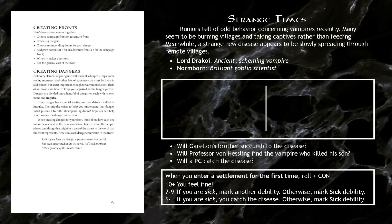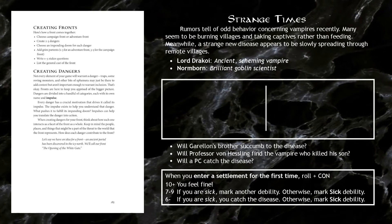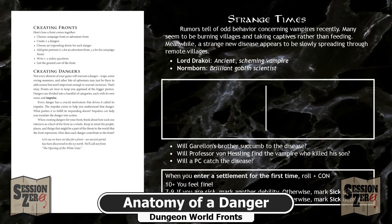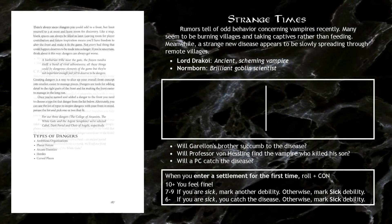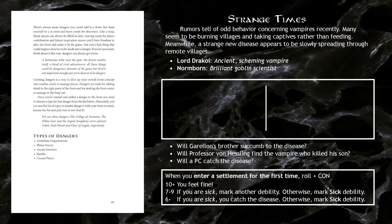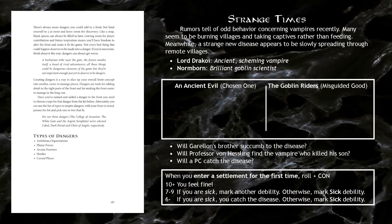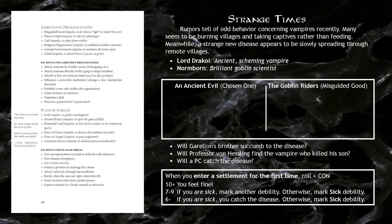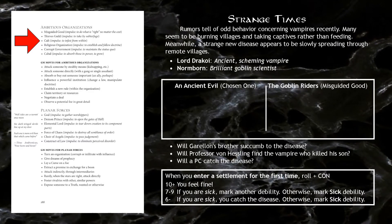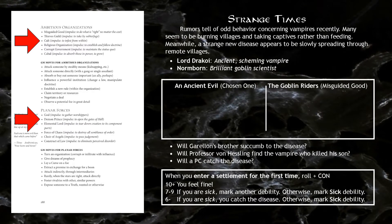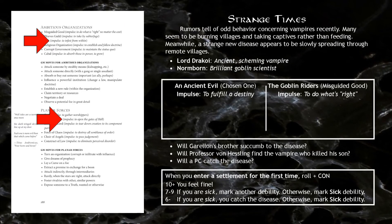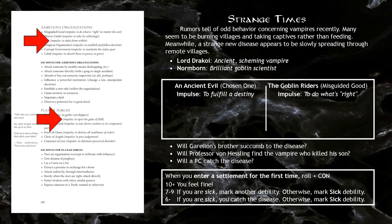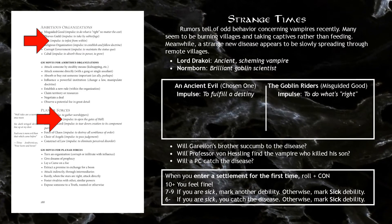Two to three dangers define the biggest threats that push the fronts forward. A danger is a group of people or monsters, and can even be physical elements of the world, such as a blasted landscape or cursed place. Each danger has a type listed on page 187, each of which has a list of GM moves which come with them. There are several names within each type — Cult from the Ambitious Organization type, for example, or Demon Prince from the Planar Forces type. Each of these will come with a specific impulse that motivates that danger toward fulfilling its impending doom. This is a guide to how that danger acts: the cult wants to infest other organizations from within; the Demon Prince wants to open the gates of hell.